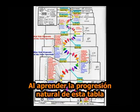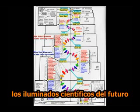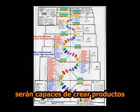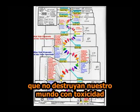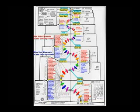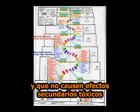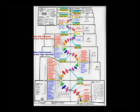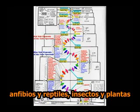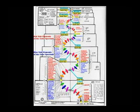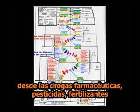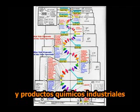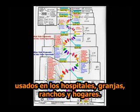By learning the natural progression of this table, illuminated scientists of the future will be able to create products which do not destroy our world with toxicity and which do not cause toxic side effects to humans, animals, fishes, amphibians and reptiles, insects and plants, from the pharmaceutical drugs, pesticides, fertilizers, and chemical products used in industries, hospitals, farms, ranches and households.